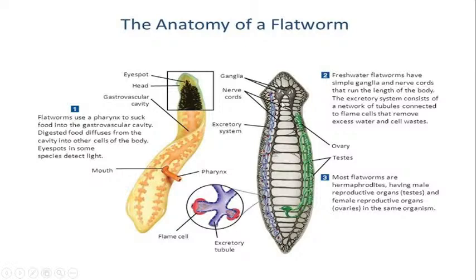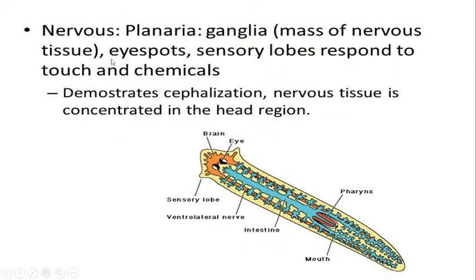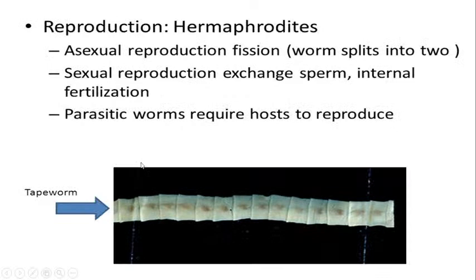The nerve cords run the complete length of the worm. The example shown here is Fasciola hepatica. In the planarian nervous system, ganglions are masses of nervous tissue — you can see the brain, sensory lobes, intestine, mouth, and pharynx in the diagram. Nervous tissue is concentrated in the head region, where sensory lobes respond to touch and certain chemicals.